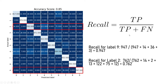Now for recall — the formula was: recall = true positive / (true positive + false negatives). We already know 947 was the true positive for label 9. For false negatives, we look at samples that are actually label 9 but our model predicted as something else — for example, 3 samples predicted as label 8, and 36 predicted as label 7. So the false negatives are 3 + 36 + 14, giving a recall of 0.947 for label 9.